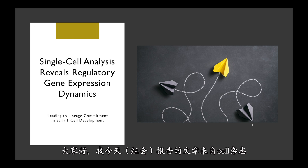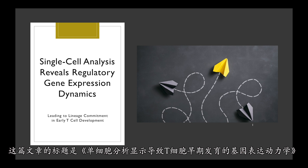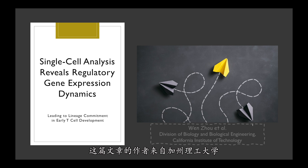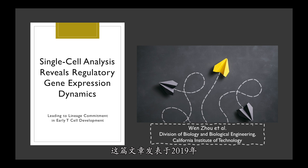Today I'm going to present a paper from Cell Journal. This paper's name is "Single Cell Sequencing Reveals Regulatory Gene Expression Dynamics Leading to Lineage Commitment in Early T-Cell Development." The authors come from the California Institute of Technology, and this paper was newly published in 2019.